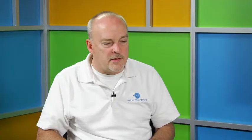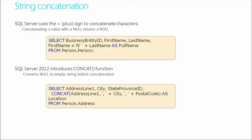To handle Unicode correctly, prefix your string literals with capital N. It's not just important to use the right data type like NVarChar — you also need to type your string literals with the N prefix. Let's now look at things we can do with strings, including string concatenation to merge multiple columns.